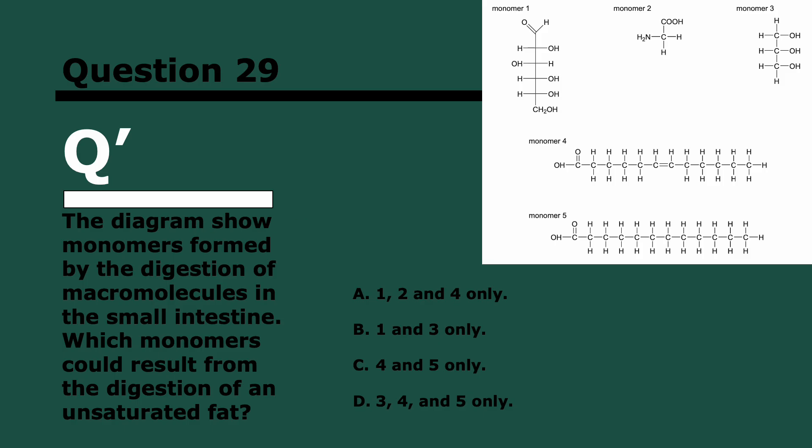Question 29. The diagram shows monomers formed by the digestion of macromolecules in the small intestine. Which monomers could result from the digestion of an unsaturated fat? Three, two, and one. It's D. Monomer one cannot be because we're talking about fats here and monomer one is glucose. Monomer two is an amino acid. But monomers three, four, and five could all be part of a fatty acid. Monomer three is glycerol. Monomer five is an unsaturated chain and monomer four is saturated. However, they could all be part of an unsaturated fat because as long as one of the chains is unsaturated, the whole fatty acid is.